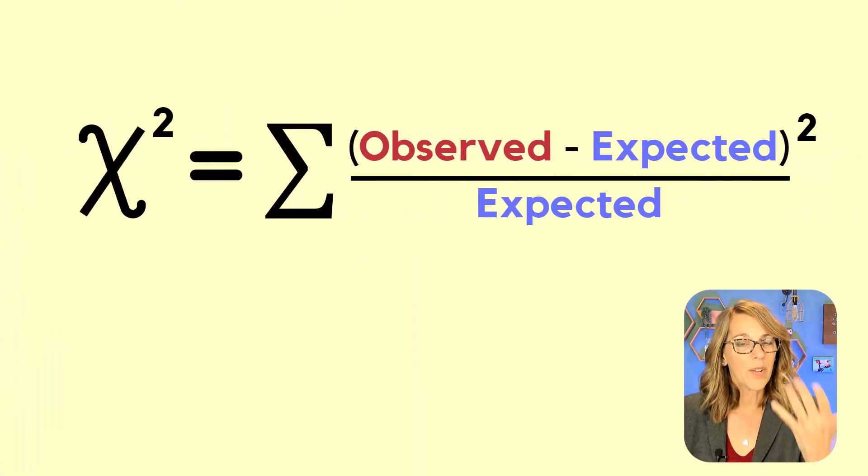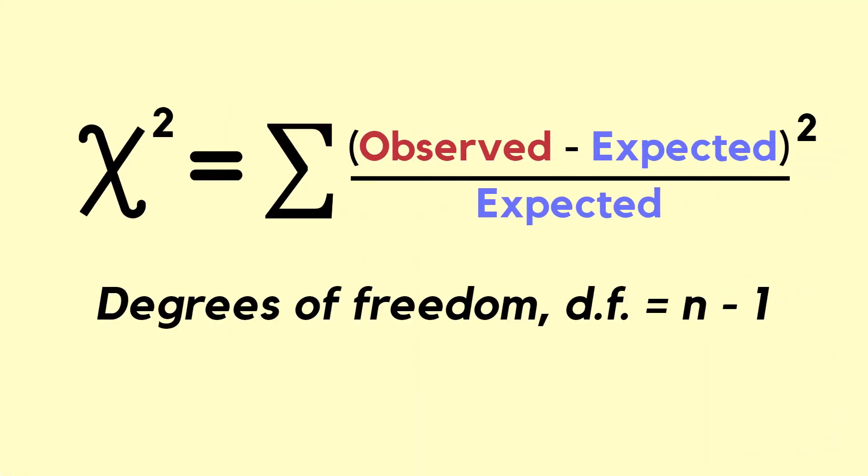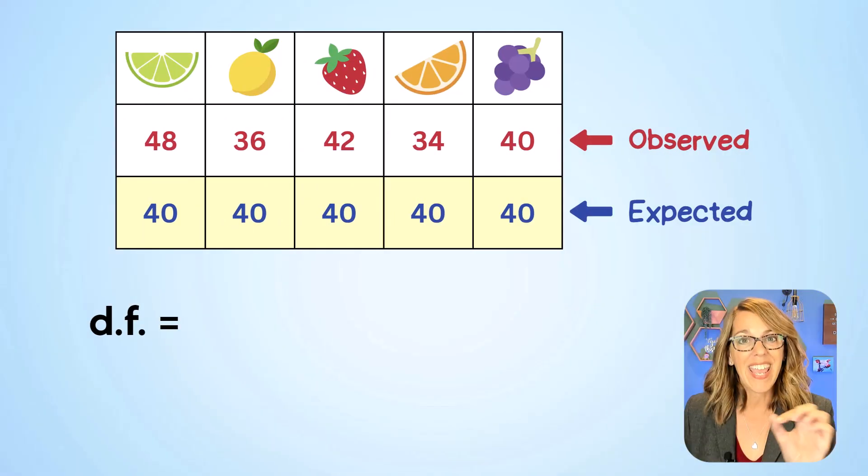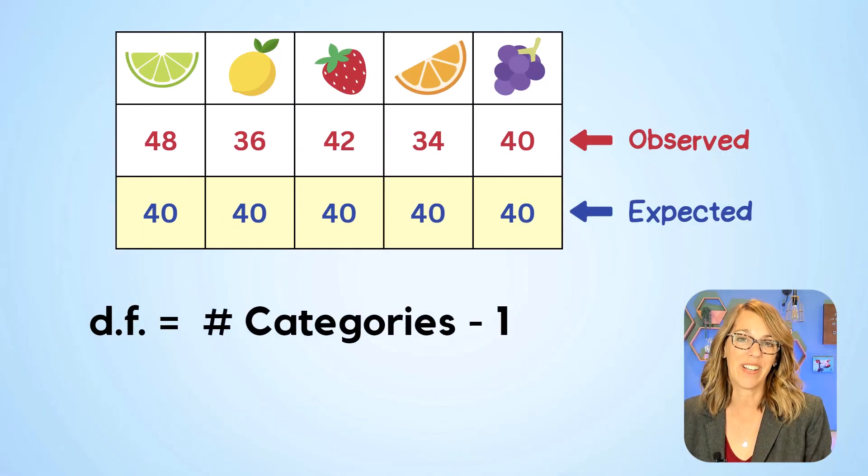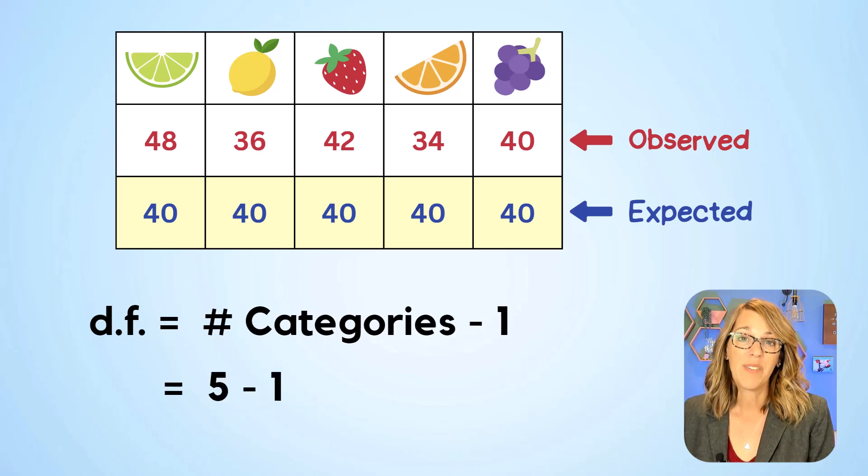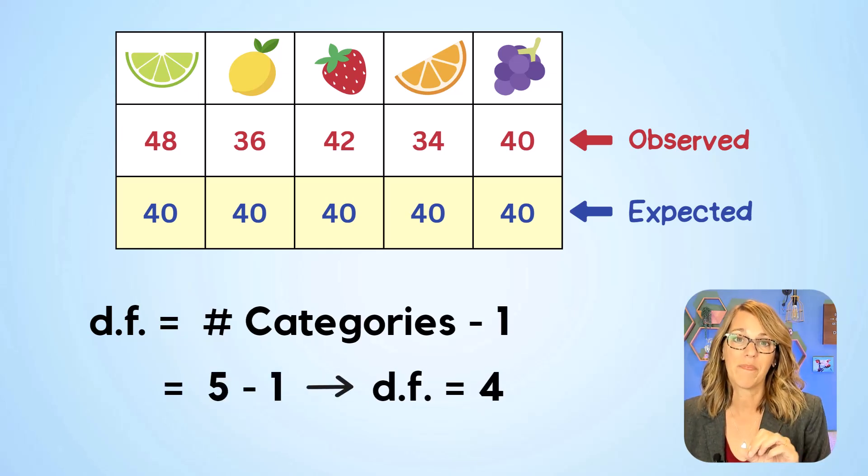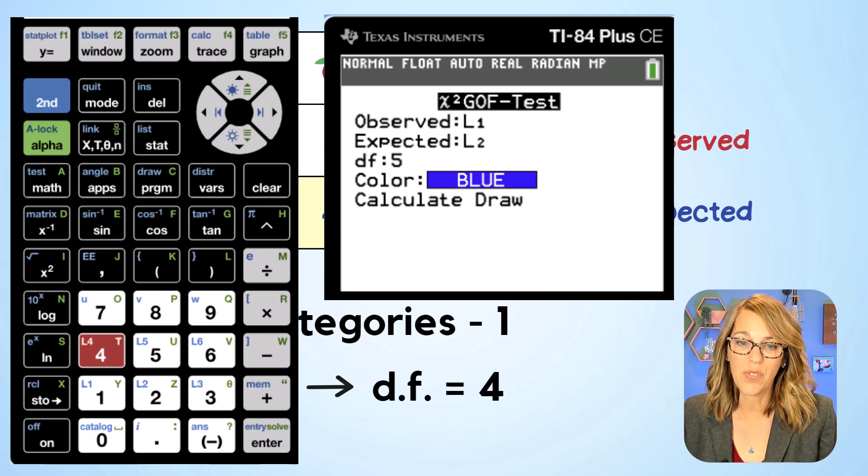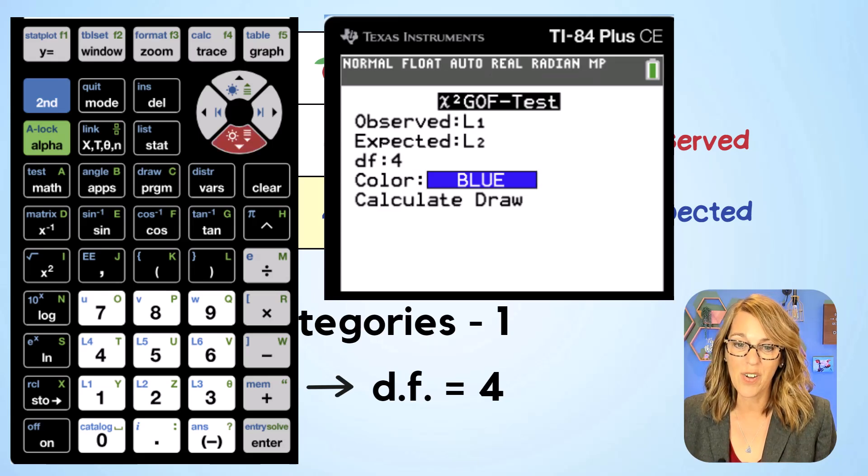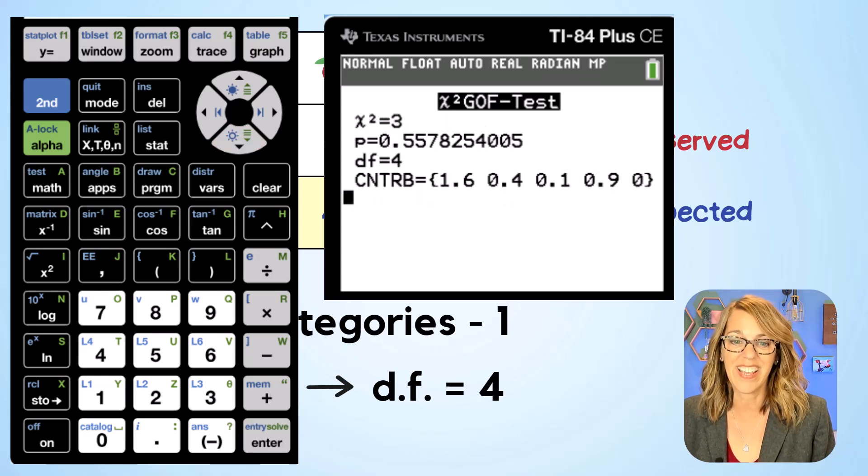And then it asks me for the degrees of freedom. While the calculator computes the chi-square test value for us, it does not compute degrees of freedom. Degrees of freedom is n minus one but n is the number of categories. So it's the number of categories minus one or flavors. We've got five of them. Minus one gives us four degrees of freedom. So we're going to change that five to a four and then arrowing down to calculate and then enter.